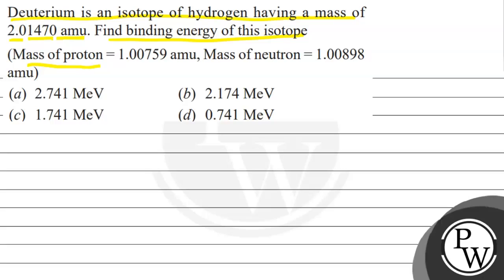Mass of proton equals 1.00759 amu, mass of neutron 1.00898 amu. Options are 2.741 mega electron volt, 2.174 mega electron volt, 1.741 mega electron volt, 0.741 mega electron volt. We have to choose the correct option.